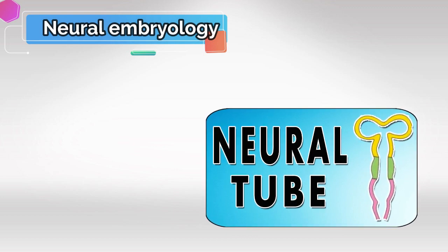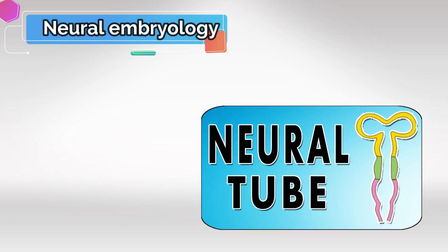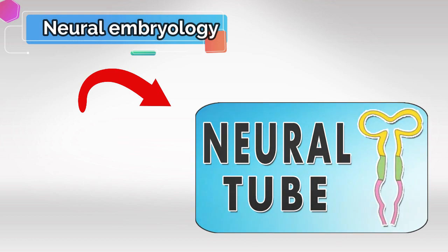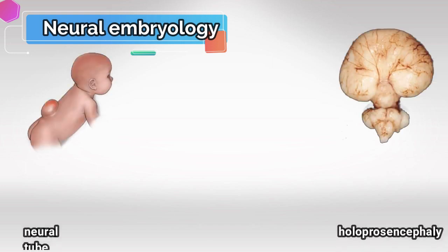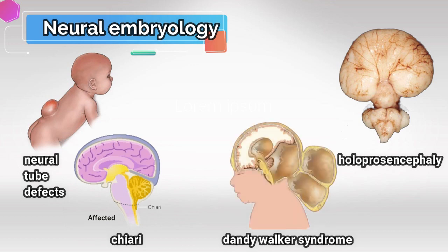Now let's talk about the embryology of the brain. You'll need to know the three primary vesicles and the secondary vesicles — I've made a video about them so you can check that out. Also related to embryology, you have to know these pathologies: neural tube defects, holoprosencephaly, Chiari syndromes, and Dandy-Walker syndrome. I don't recommend wasting too much time on these syndromes, but just know enough to be able to differentiate between them.